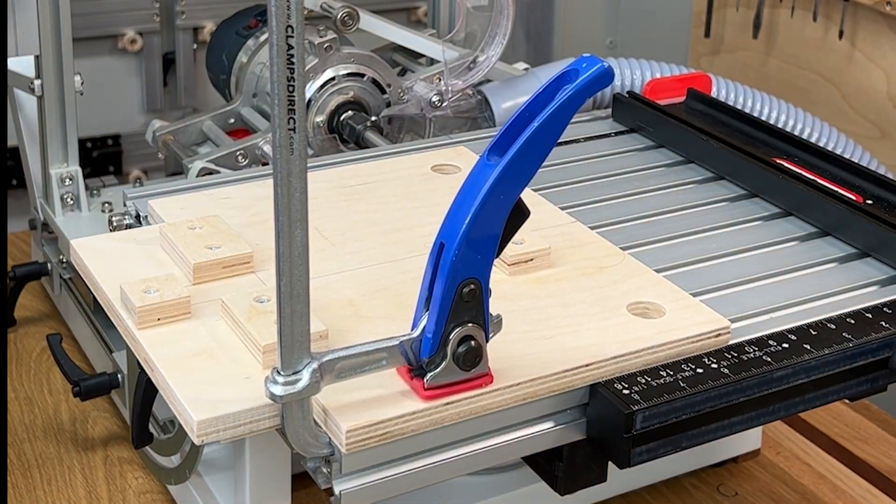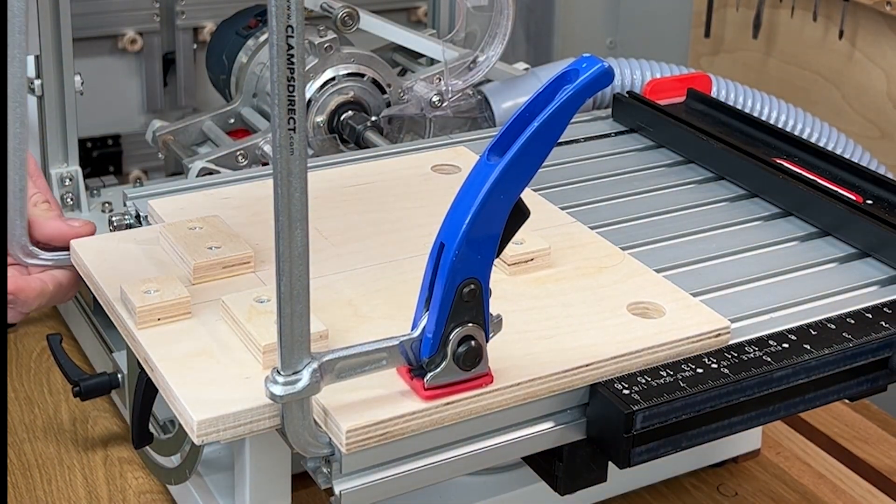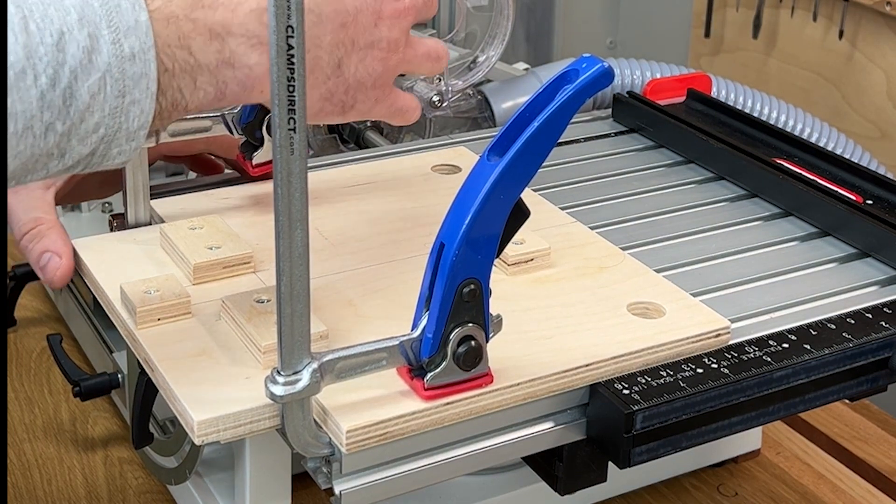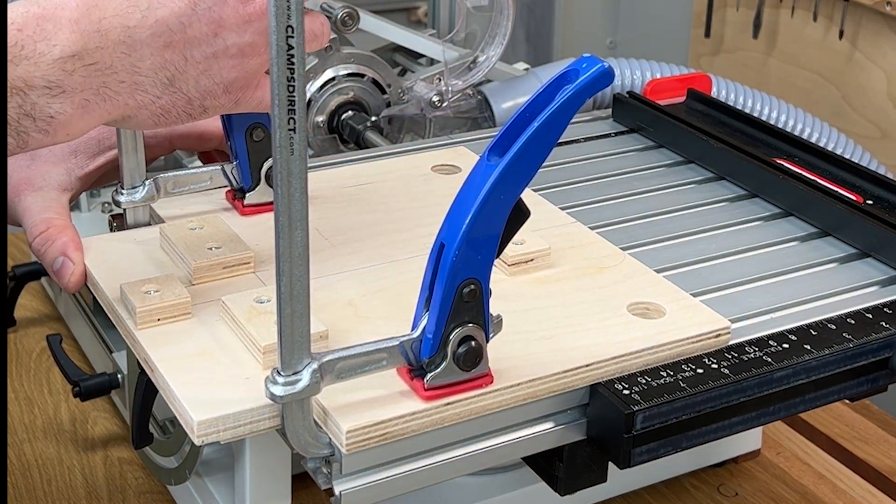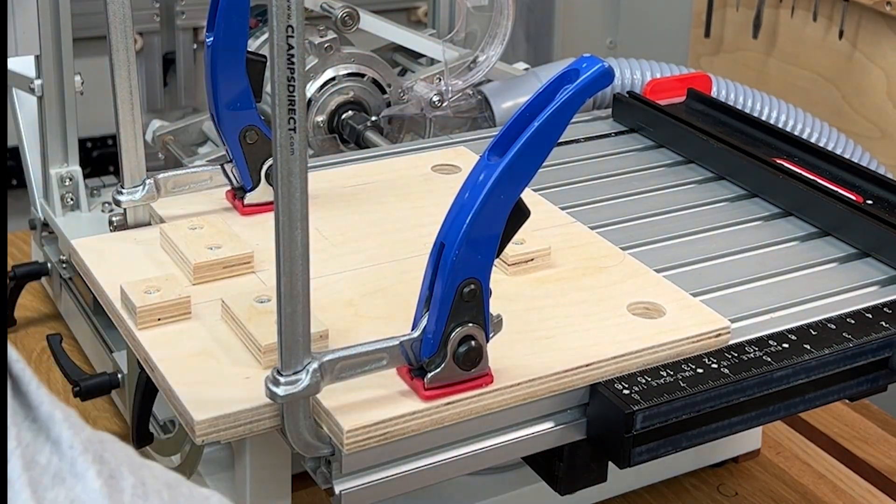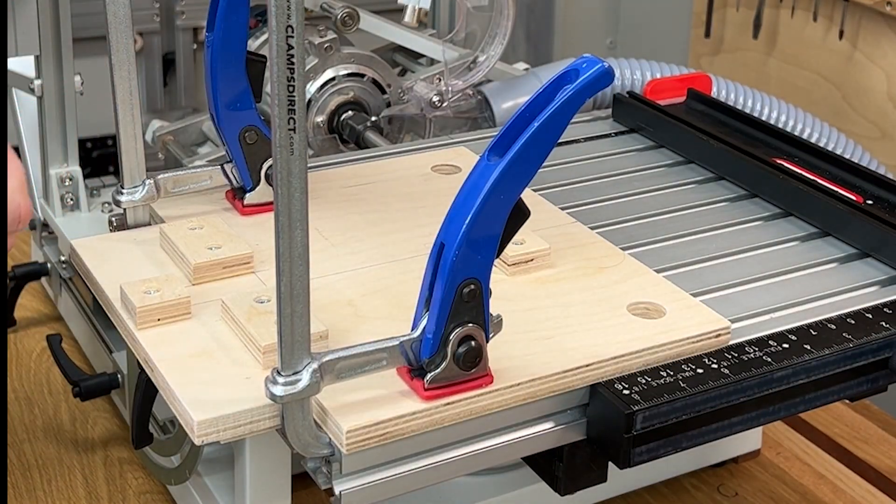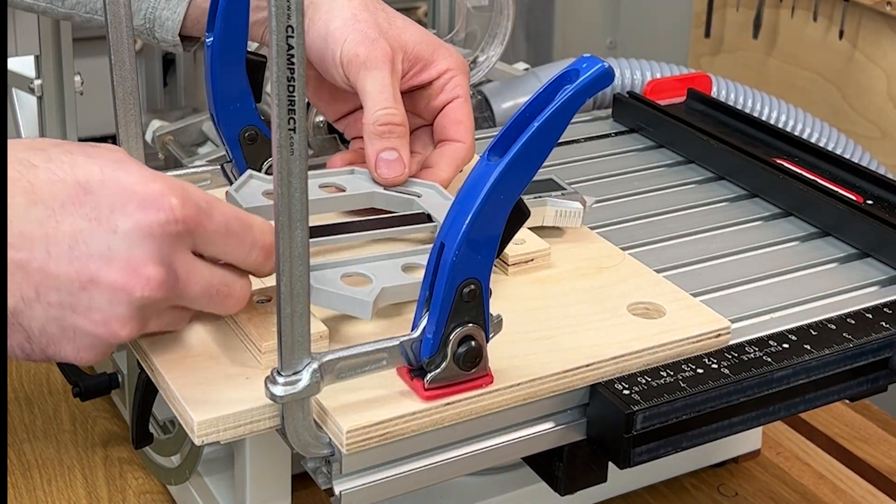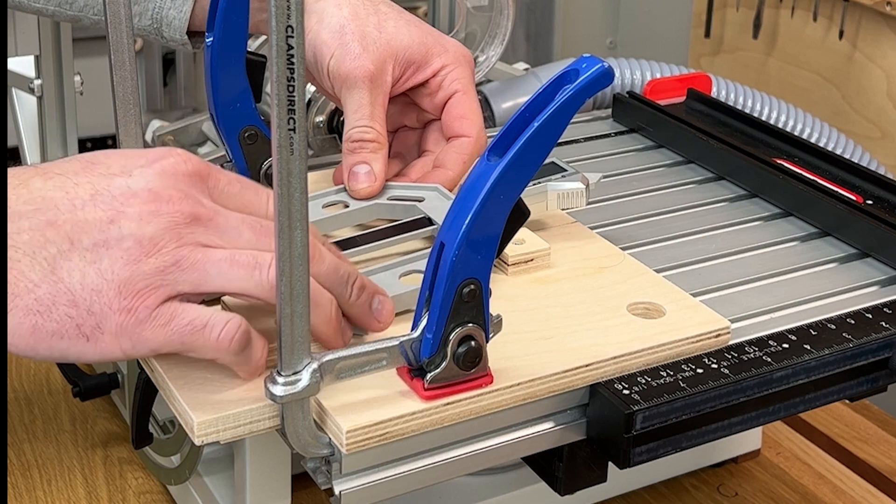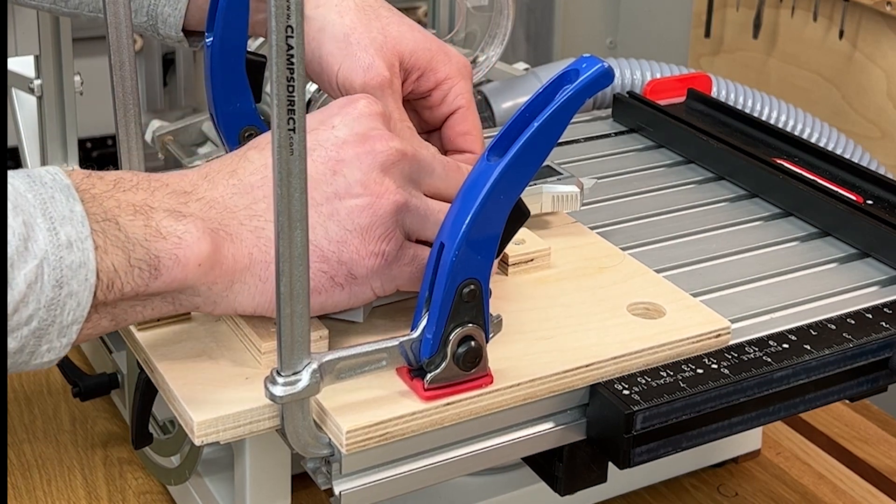He shows how to initially find the center of the table, and then to set the jig up in just a few seconds any time you need it. Here we've removed the gauge from the jig to show how easy it is to replace, but most of the time we leave the gauge mounted on the plywood base so it's always ready to go.